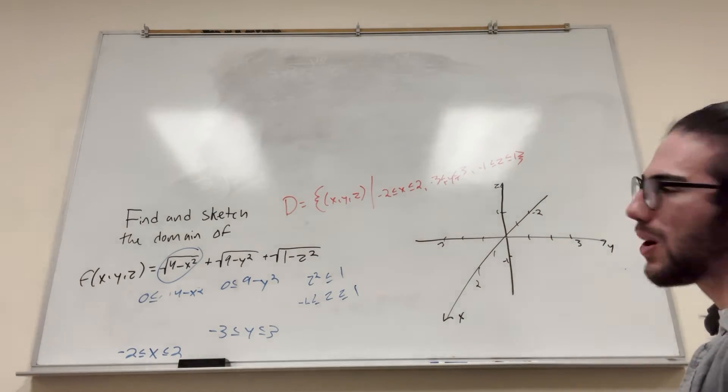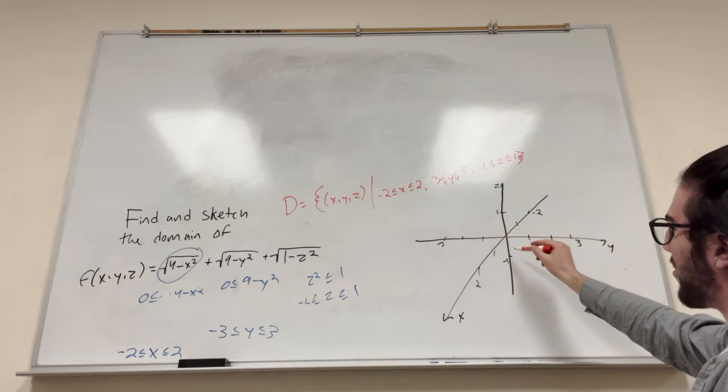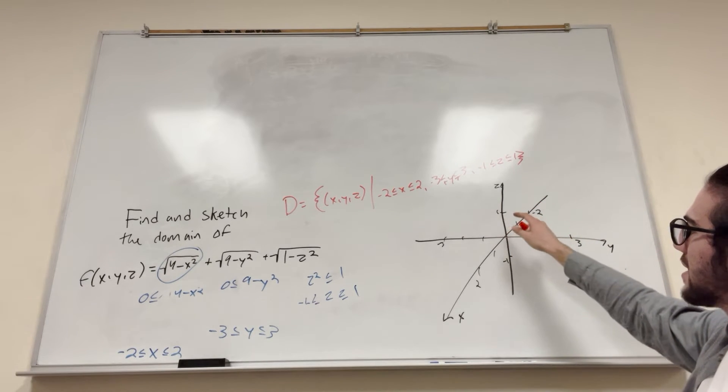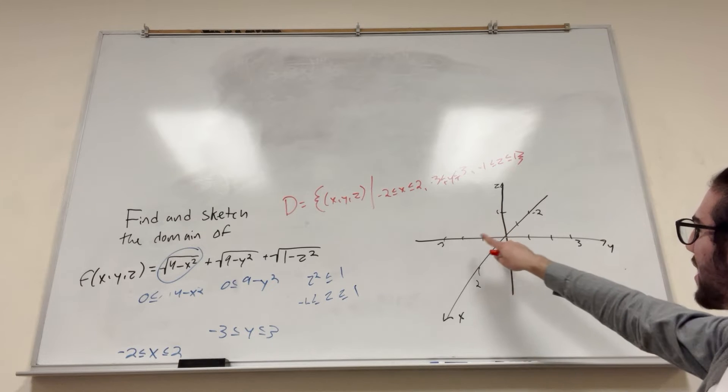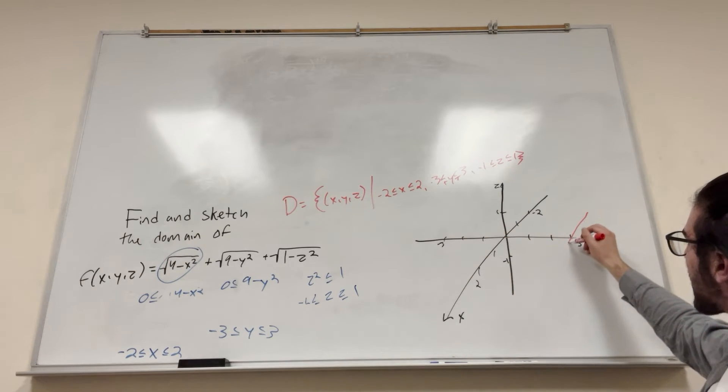Alright, so how do we draw this? Well, we just try it. Z has to be in the range between negative one and one. X is in the range between negative two and two, and y is in the range between negative three and three. So we're just going to have a box.